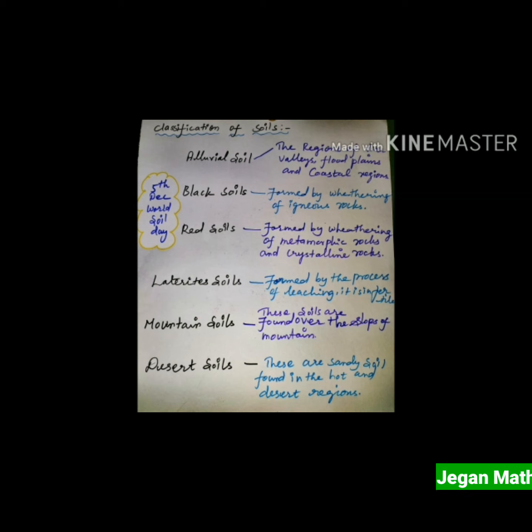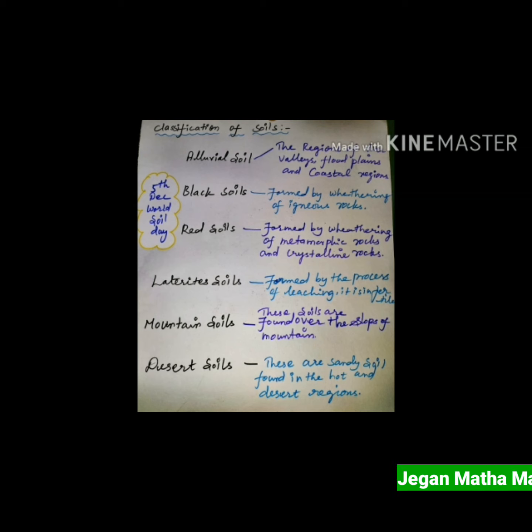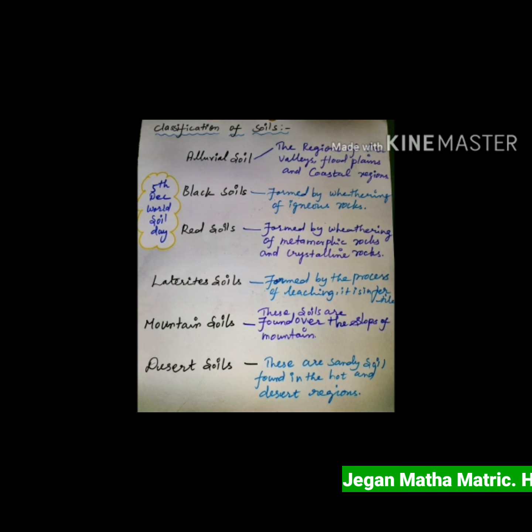Next, black soil. These soils are formed by weathering of igneous rocks. Black soil is clay in nature and it is ideal for growing cotton.